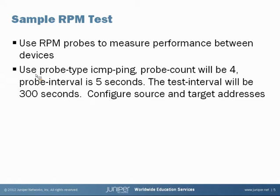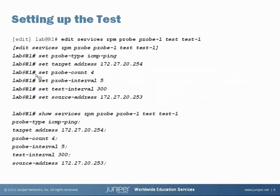We'll take a look at the syntax on the slides first and then configure our test on the device. We are under the edit services RPM hierarchy. We've named our probe 'probe 1' and the name of our test is 'test 1'. Next we set the probe type, which will be ICMP ping. We set the target address, define the probe count and probe interval, then the end-to-end test interval, and optionally set the source address as well.